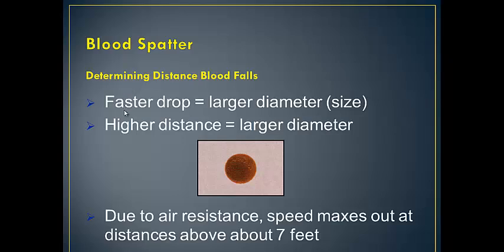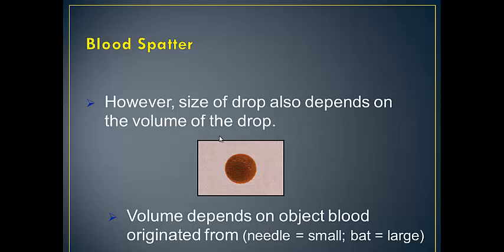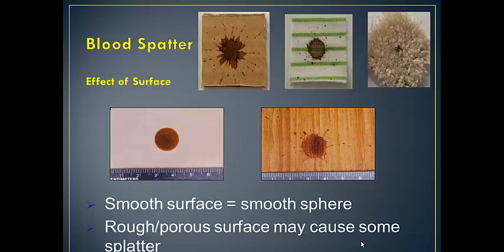When you determine the distance, some basic physics come into play. The faster the drop, the larger diameter. So height would play a factor in that. Anytime you get above 7 feet, that's kind of where the speed will max out, and it's due to air resistance. We're not going to do any calculations with that, but that's just something to keep in mind. Now, the drop of the blood, how large it is depends on the volume. For example, if it falls from a needle, something very small, obviously the volume is not going to be as great as if it comes from a bat, even though it would fall from a greater distance. So those are two factors you need to keep in mind when you're looking at drops.